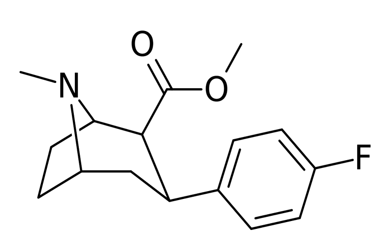Radiolabeled forms of CFT have been used in humans and animals to map the distribution of dopamine transporters in the brain. CFT was found to be particularly useful for this application as a normal fluorine atom can be substituted with the radioactive isotope 18F, which is widely used in positron emission tomography.